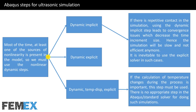Now I want to talk about Abaqus steps for ultrasonic simulation. Most of the time, at least one of the sources of nonlinearity is present in the model, so we must use the nonlinear dynamic steps. Nonlinear dynamic steps in Abaqus include dynamic implicit, dynamic explicit, and dynamic tempdisp explicit. About the dynamic implicit step, if there is repetitive contact in the simulation, using the dynamic implicit step leads to convergence issues which decrease the time increment size, making the simulation slow and not efficient.